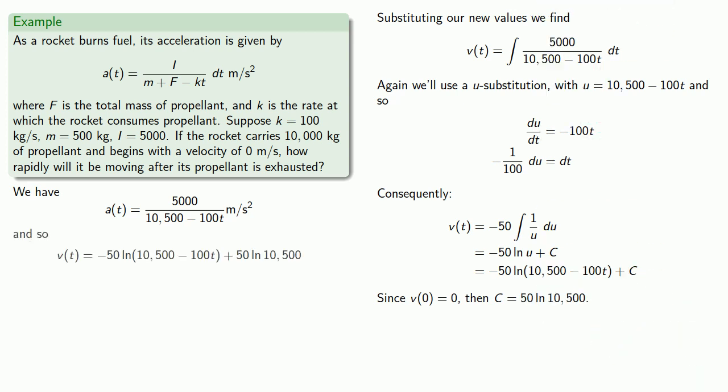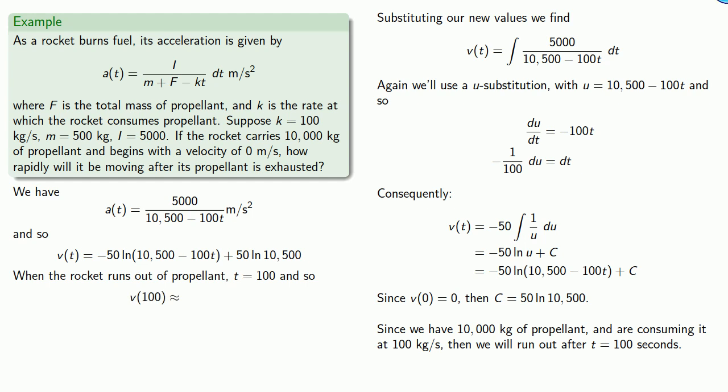And this time, since we have 10,000 kilograms of propellant consuming at 100 kilograms per second, then we'll run out after T equals 100 seconds. And so we want to find V of 100, which works out to be 152 meters per second.